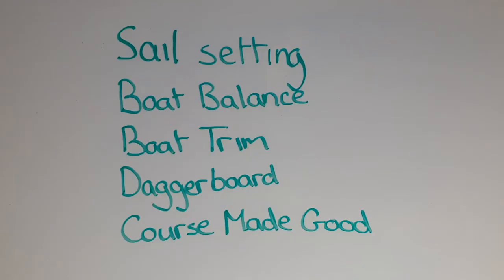Firstly, I'll just do a quick rundown on what the five essentials are and what each of them means. Then I'll go through how to apply sail setting, boat trim, and daggerboard to each point of sailing.